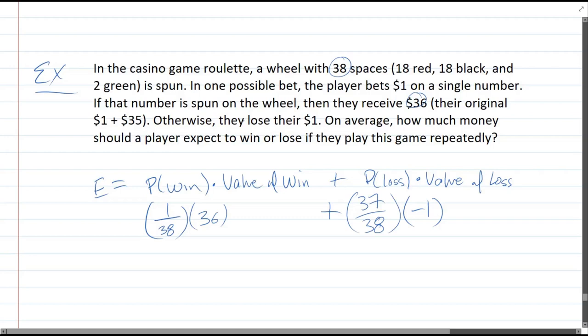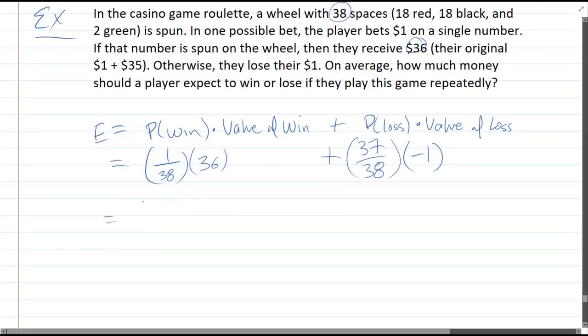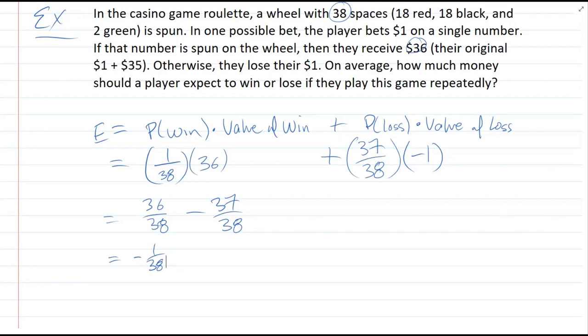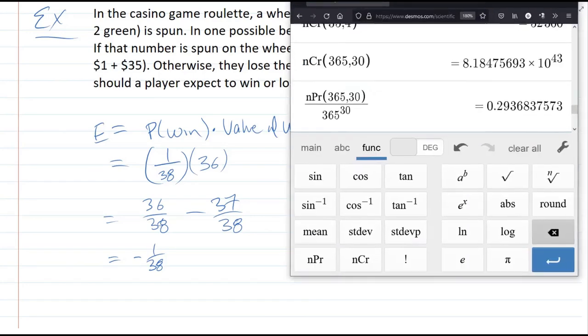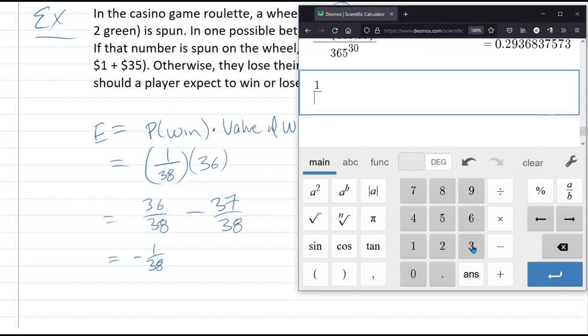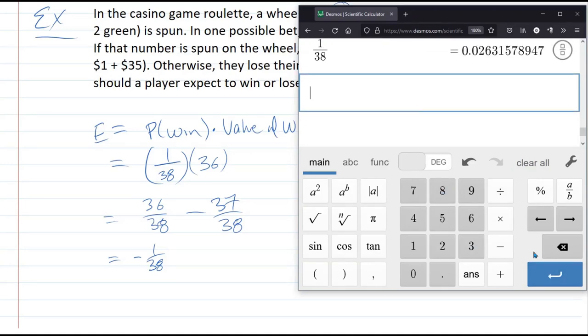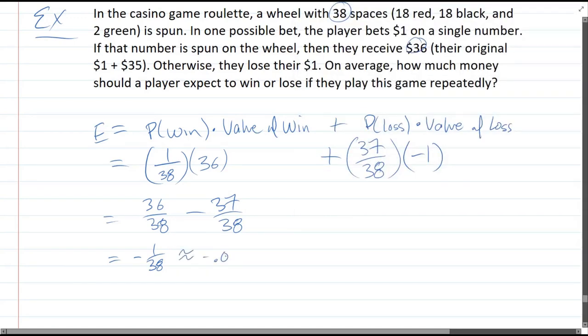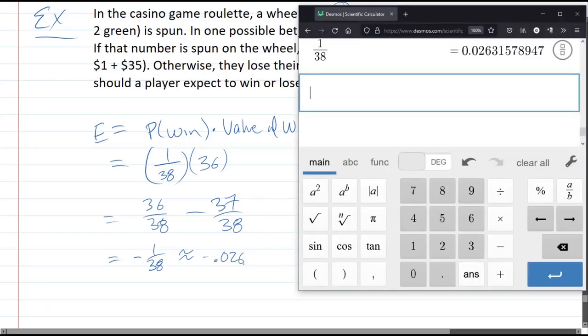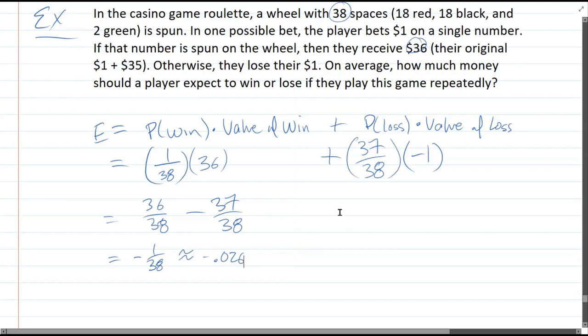All right, so, how much would you expect to win or lose if you play the game repeatedly? That's the expected value. So, we're going to go ahead and compute these. So, we can rewrite this fraction as 36 over 38, minus, there's a negative here, 37 over 38. You can absolutely compute these into decimals, and then subtract them. That's totally okay. I'm just going to go ahead and use these fractions. So, your average value would be negative 1 over 38. And we're going to go ahead and compute that. Here's our calculator. And this is negative, so it's 2.6 cents.